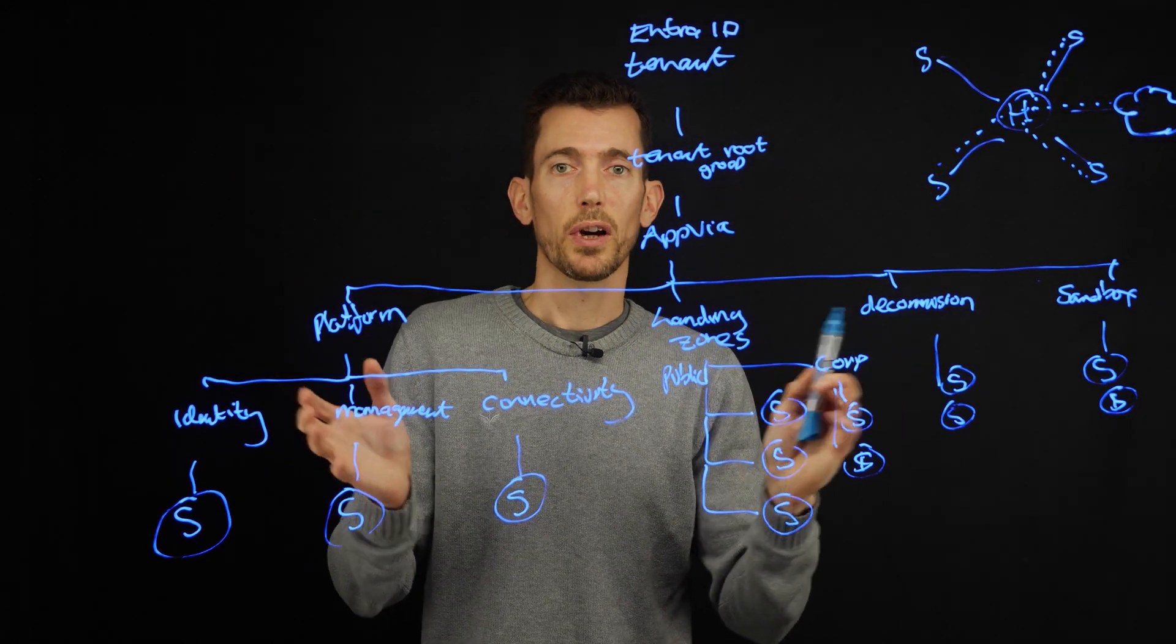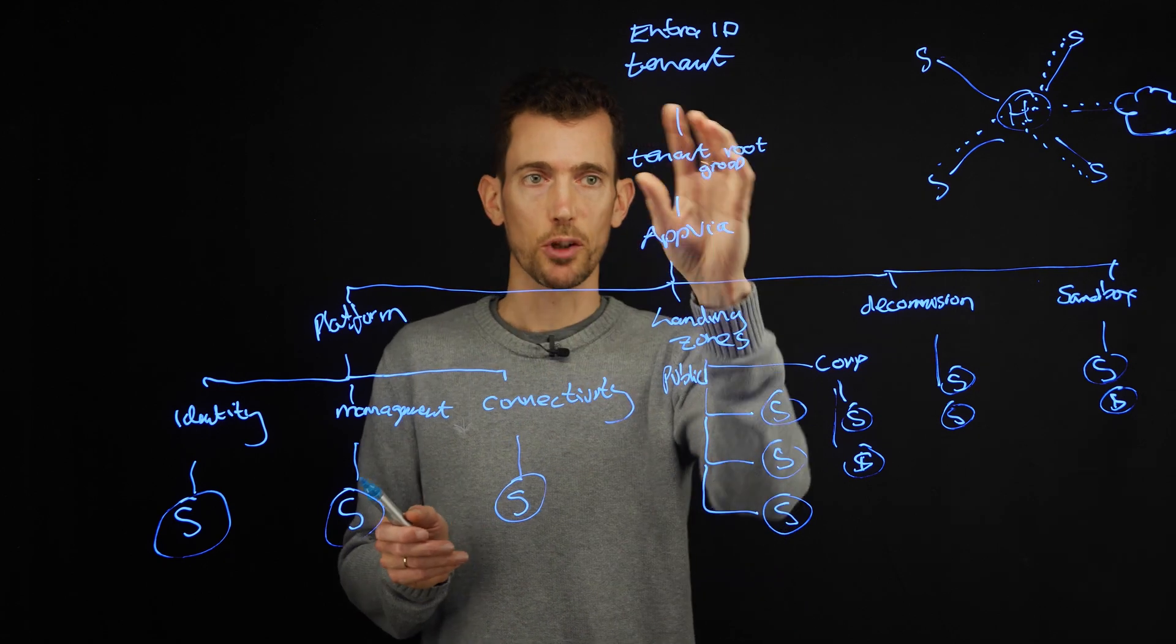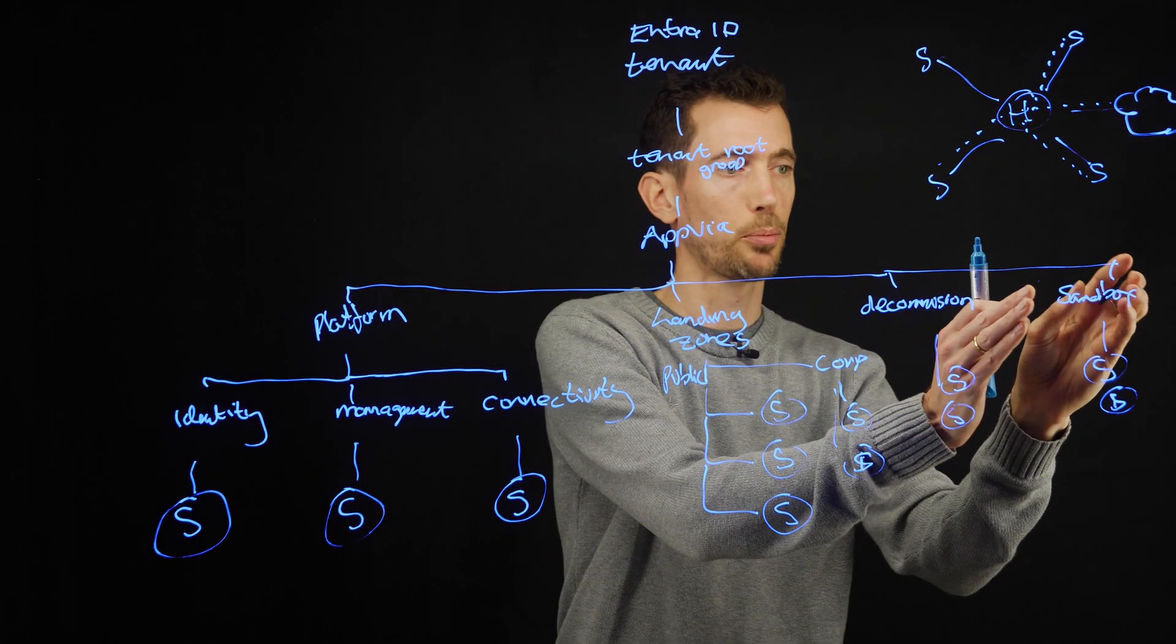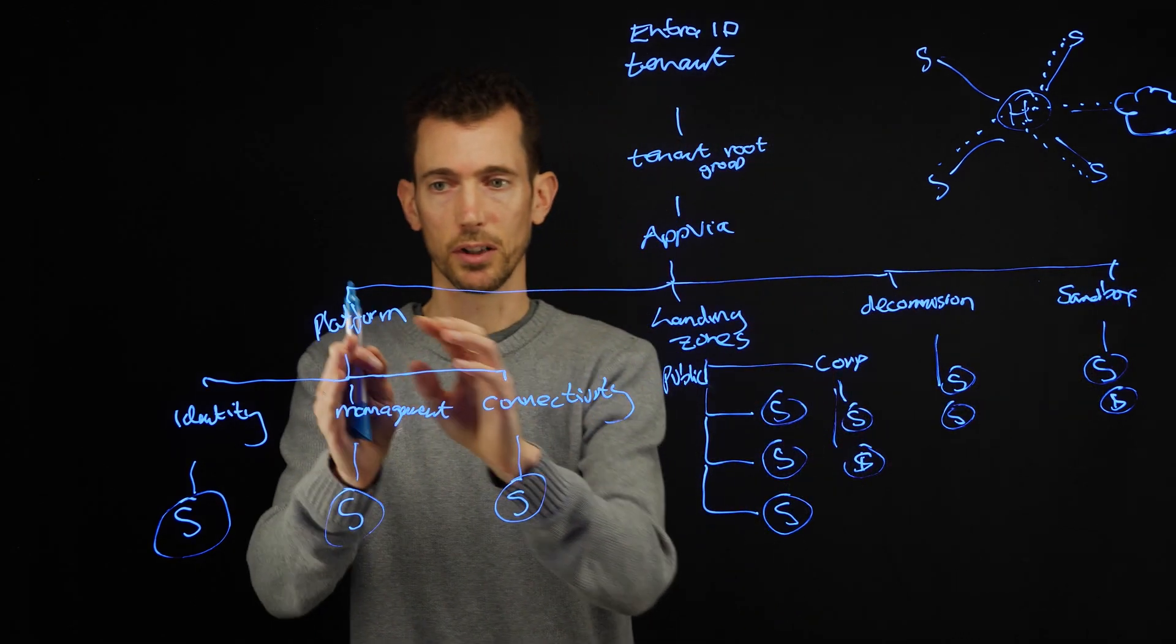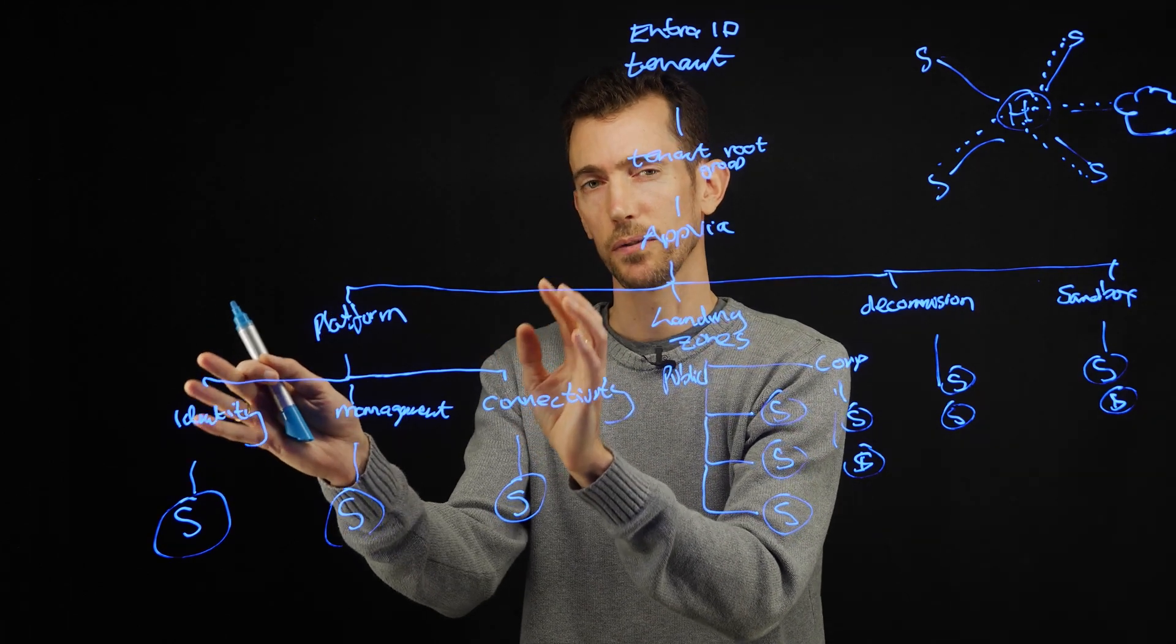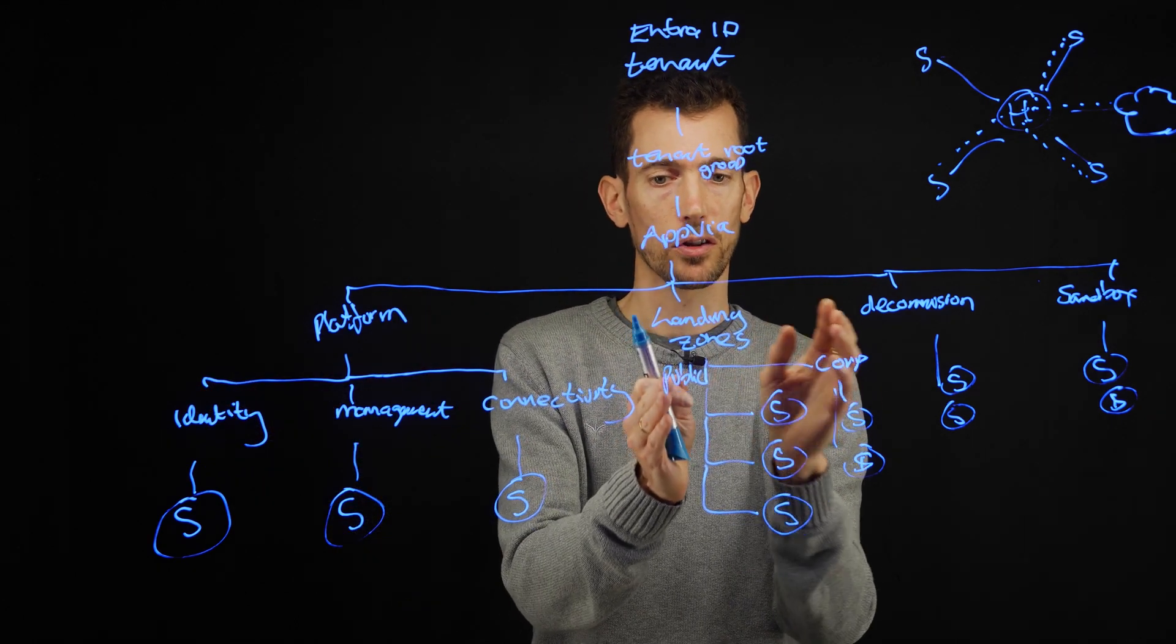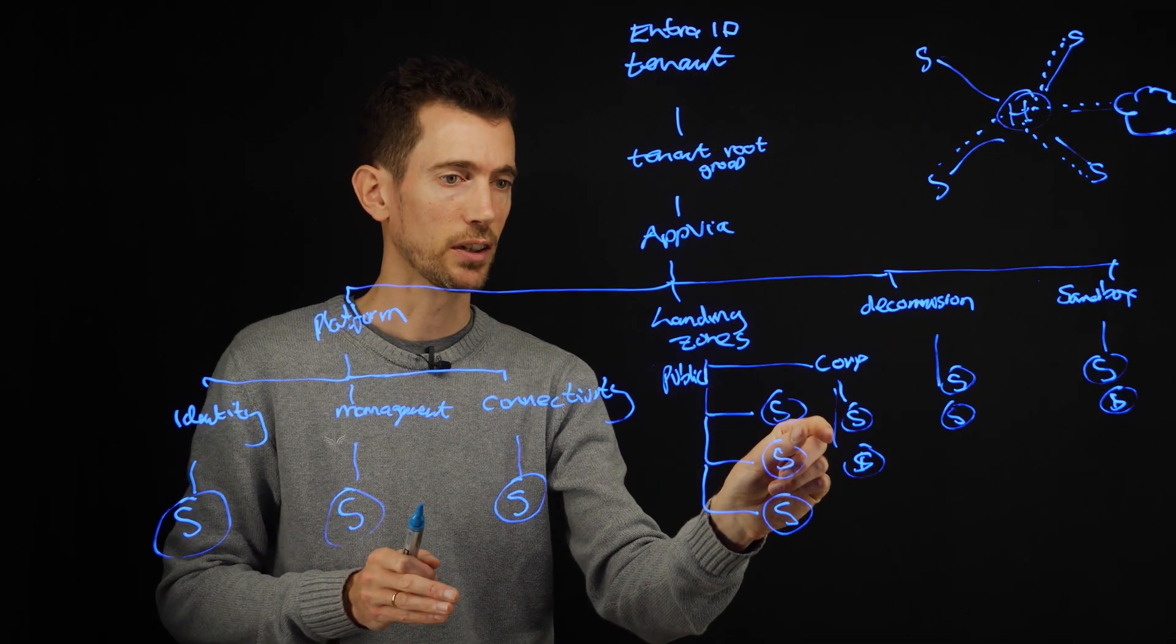So that's a good way of organizing your organization within Azure. You've got management groups so you can apply policy at any point on here. So you might have quite lax policies over your sandboxes, whereas everything over here on the platform side is fairly set up from the beginning. There's not many changes on there. Landing zones, you're splitting between your public and your corporate. And again, you can have different policies in those areas.